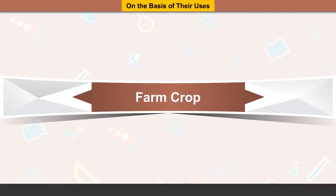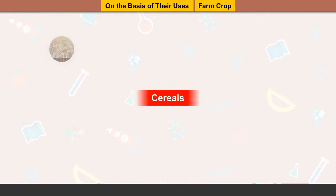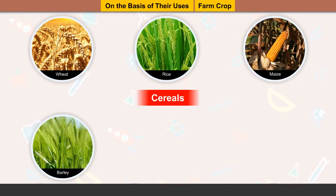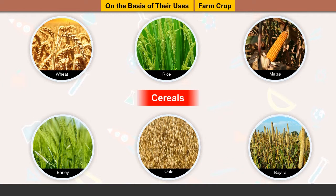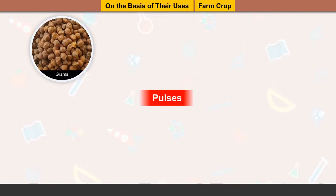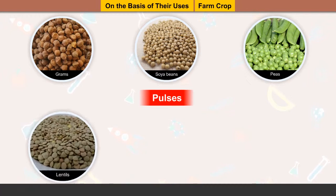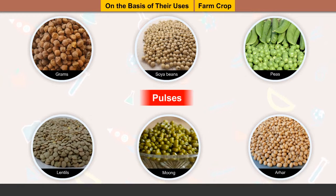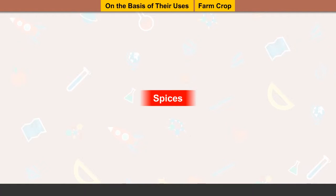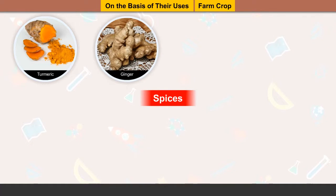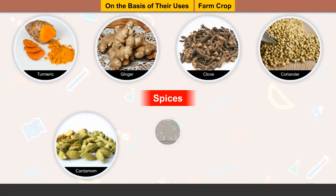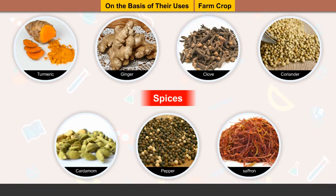Farm crops — Cereals: wheat, rice, maize, barley, oats, bajra, etc. Pulses: grams, soya beans, peas, lentils, moong, arhar, etc. Spices: turmeric, ginger, clove, coriander, cardamom, pepper, saffron, etc.